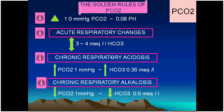In acute respiratory changes — whether CO₂ retention or washout — the kidney cannot compensate immediately because renal compensation is enzymatic. PaCO₂ increase stimulates carbonic anhydrase, which takes time to form bicarbonate. The acute renal response is only 3–4 mEq/L: if CO₂ rises from 40 to 60, bicarbonate increases by 3–4; if CO₂ drops, bicarbonate decreases by 3–4 mEq/L.